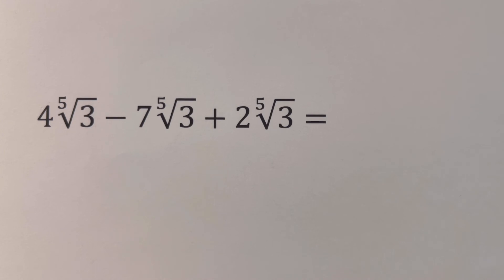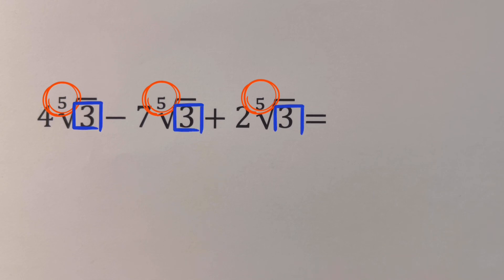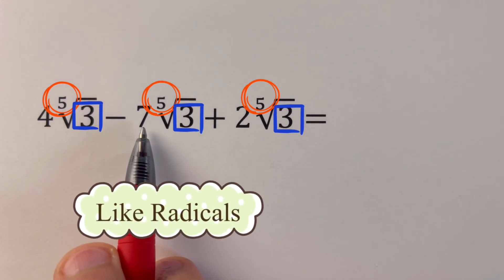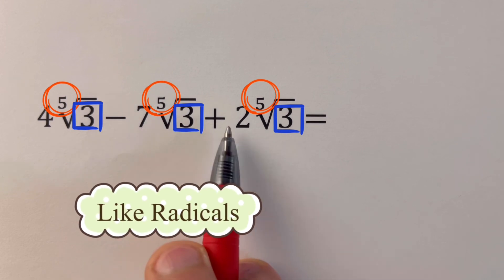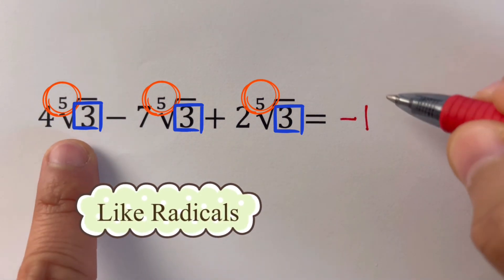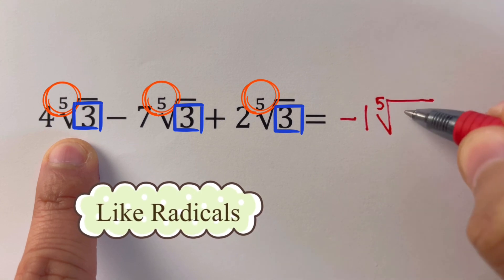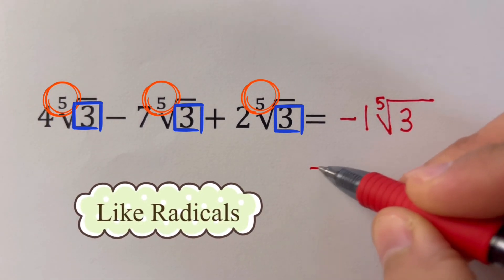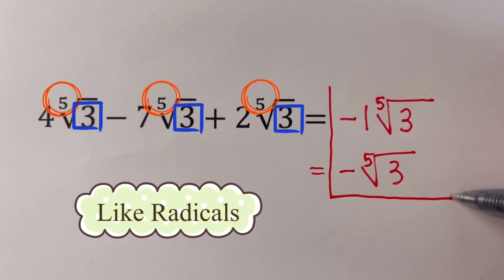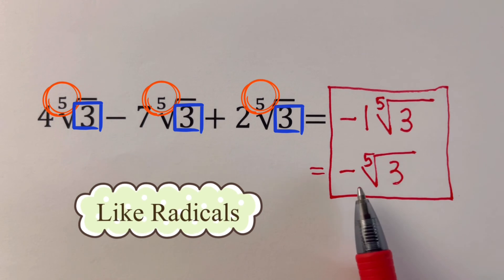All three indices are 5 and all three radicands are 3, so all three expressions are like radicals. We add and subtract the coefficients: 4 minus 7 equals negative 3, then negative 3 plus 2 equals negative 1. We copy the common radical expression — the fifth root of 3 — giving us negative 1 times the fifth root of 3, which we can rewrite as negative fifth root of 3. Either form is correct, since a coefficient of 1 is invisible.